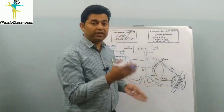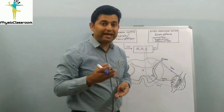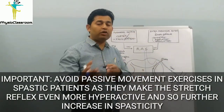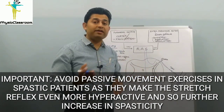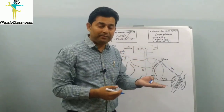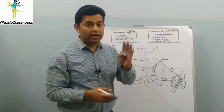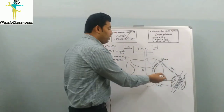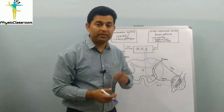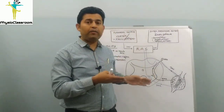Excessive gamma discharges lead to excessive firing of the intrafusal fibers, leading to excessive firing of the 1a fiber, and ultimately increased alpha motor neuron firing to the extrafusal fiber, causing more contraction in the spastic muscle. Therefore, I always advise junior physios and students to never encourage fast passive movements. Relatives of stroke and spinal cord injury patients often think more movement means faster recovery, but fast passive movements will lead to more hyperactivity of the muscle stretch reflex and increase spasticity.